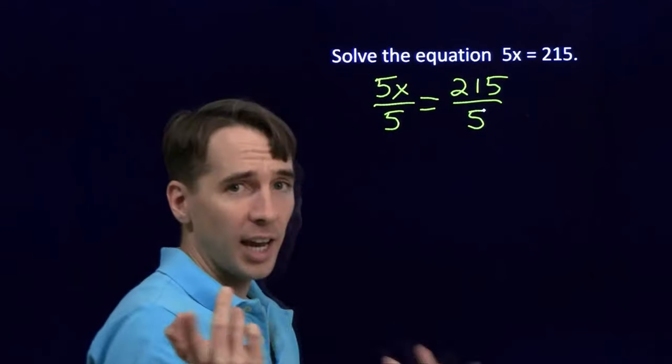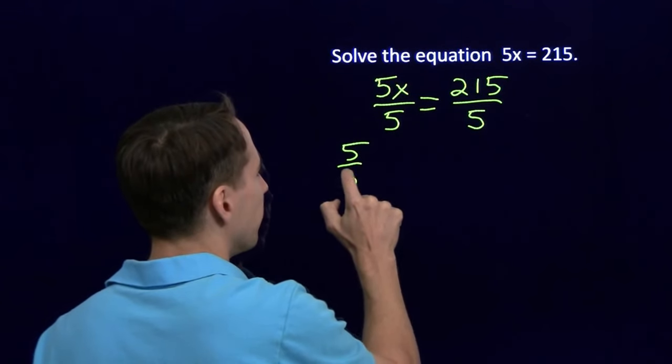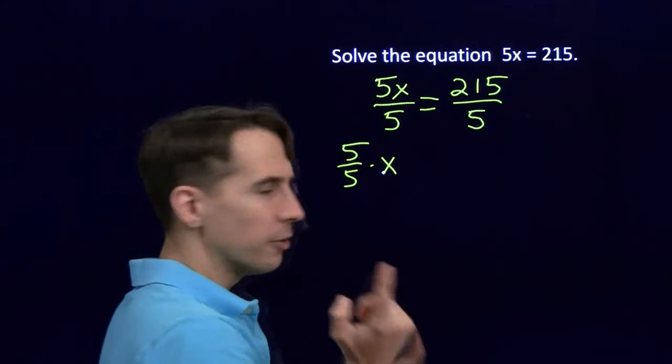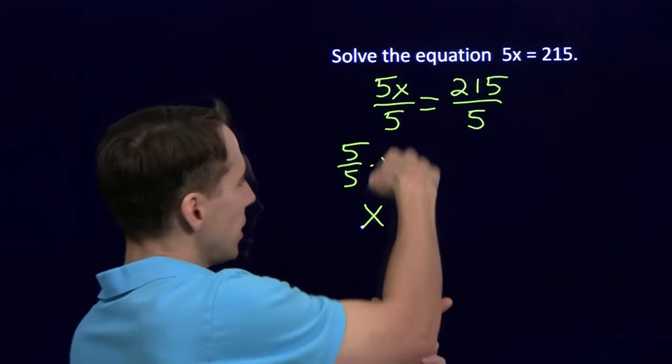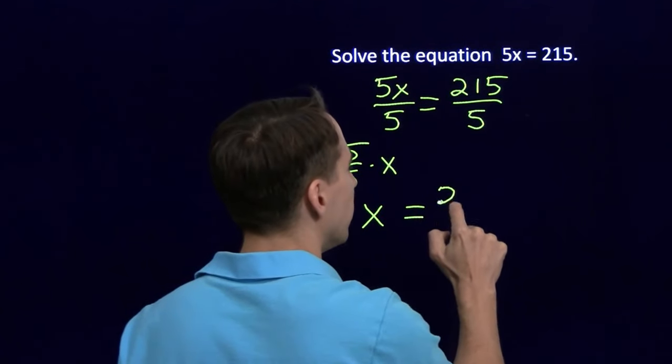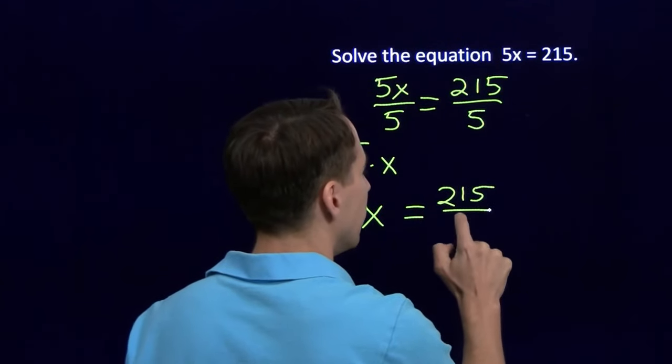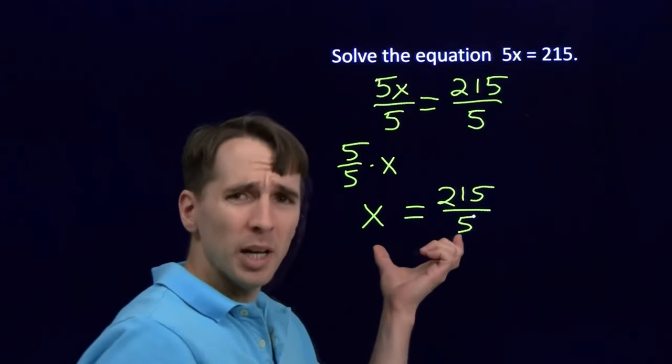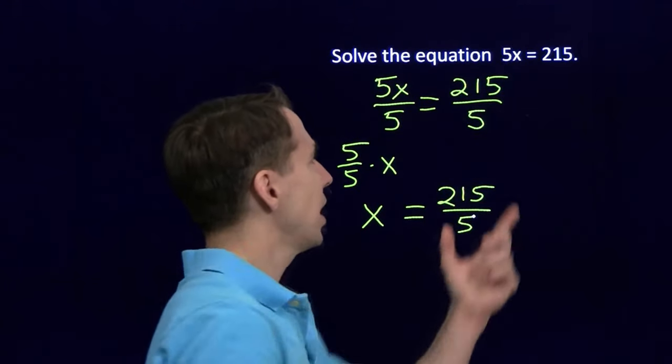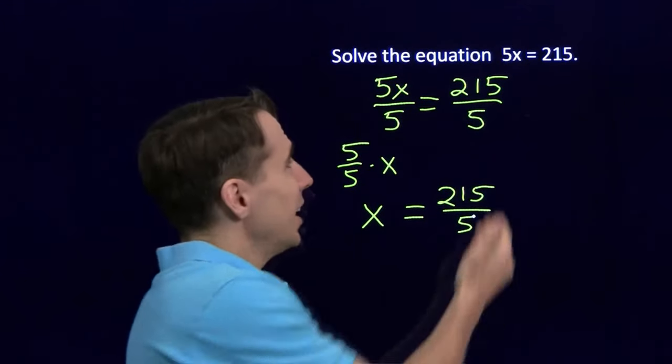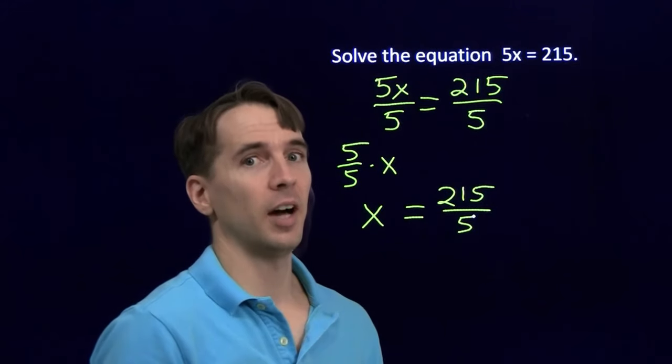Now the 5s here cancel out, and you remember why, right? We can write this as 5 over 5 times x. 5 over 5 is just 1. So this side's just x, and we're left with 215 divided by 5. And you might have been able to jump straight to this. This is 5 times x is 215. Then x has to be 215 divided by 5.